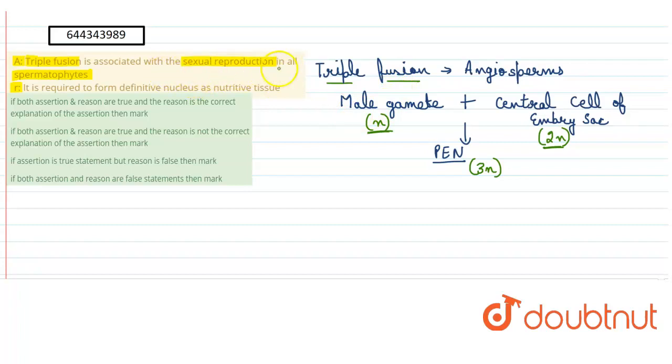Now the statement is saying that it is associated with sexual reproduction in all spermatophytes. So what are basically spermatophytes? Spermatophytes are the seed producing plants, and it has gymnosperms and angiosperms.